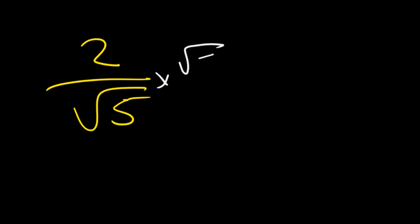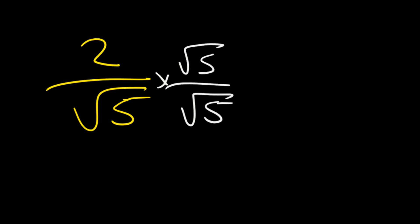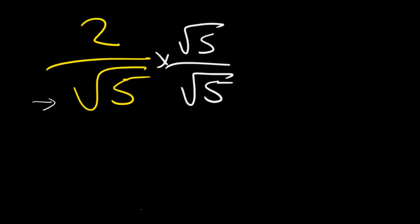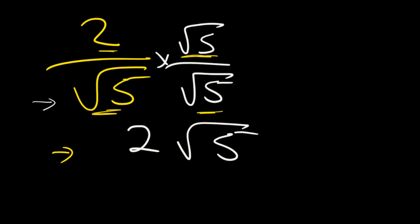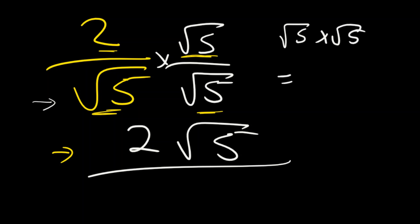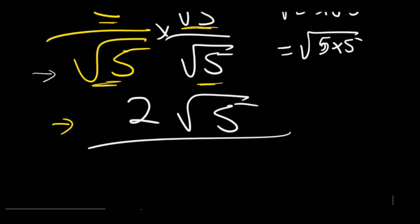We multiply with the denominator twice — multiply at the top and at the bottom. We use the denominator to multiply, don't forget that. So we multiply this two with this root of five, and this root of five with this root of five. You're going to get two root of five from the top, and at the bottom root of five times root of five equals root of five times five.